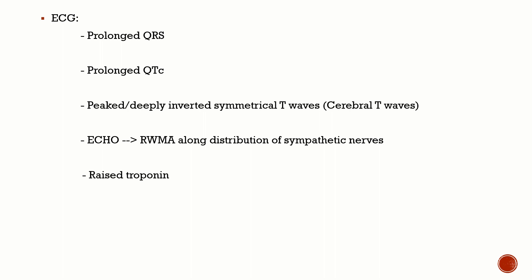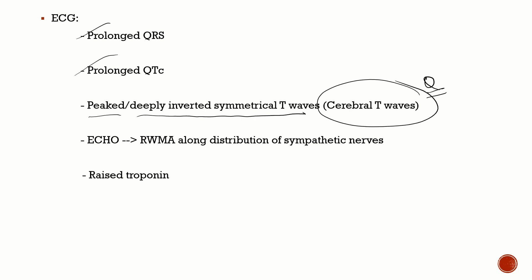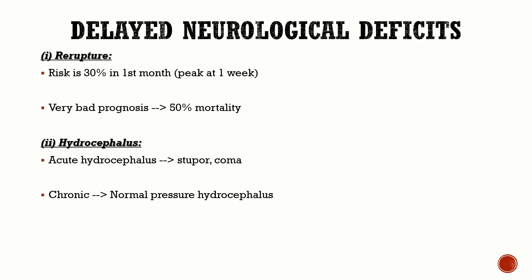Cardiac manifestations of SAH result from sympathetic overactivity with excess catecholamines in circulation. ECG findings include prolonged QRS, prolonged QTc, and peaked or deeply inverted symmetrical T-waves — called cerebral T-waves, a very important question. Unlike MI where you see regional wall motion abnormalities along vascular territories, SAH can cause a reversible cardiomyopathy with wall motion abnormalities distributed along sympathetic nerve distribution. Troponin levels may also be raised.